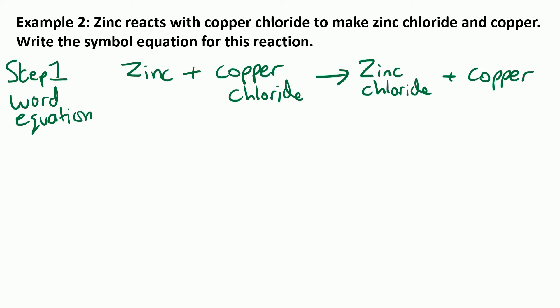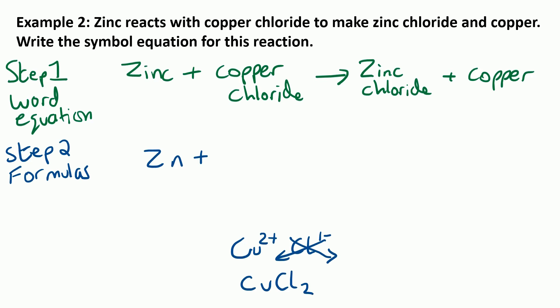Step two is to write the formulas. So zinc is Zn. Copper chloride — I'll remind you of the crossover method here. Copper is a 2+ because it's in that middle section; if in doubt, they're a 2+. Chloride is a 1− as it's in group 7. Cross the numbers over and you get CuCl₂. So we put that formula in there underneath where we've written copper chloride — you can see how useful that word equation is.